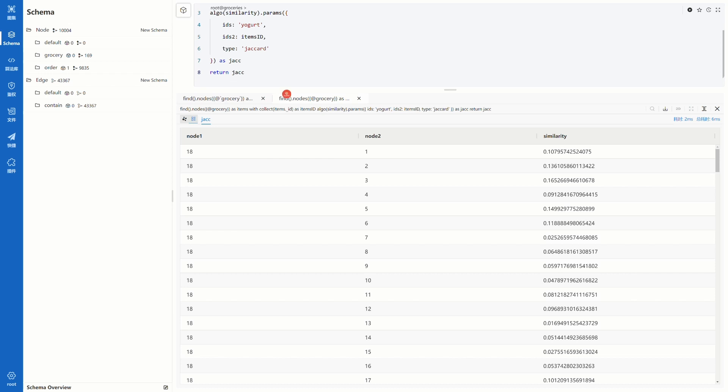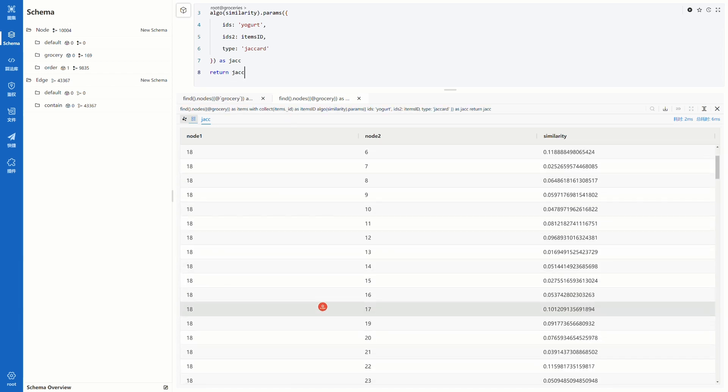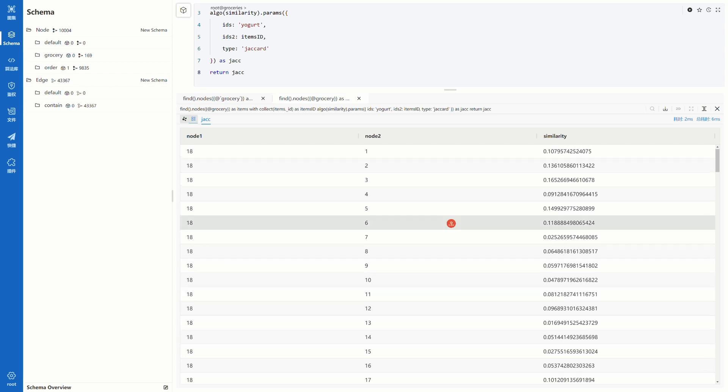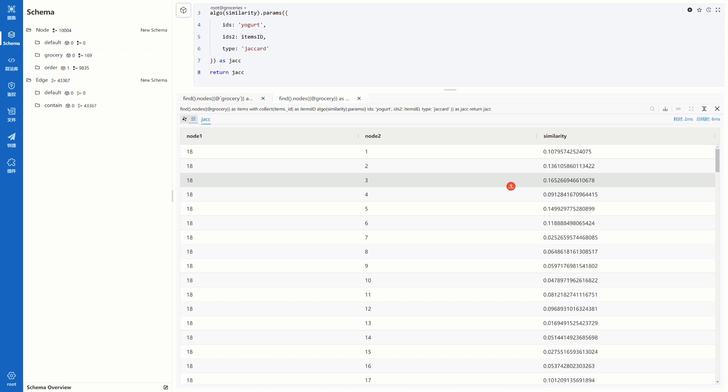There are three columns in the results. All is 18 in node 1 column. This is the UUID of the yogurt node. In node 2 column, it's the UUID of all the other grocery nodes. And the third column is the similarity. It's good but we could make it more clearly. Change to stream mode. First of all, let's reorder all the results by the similarity score from high to low.